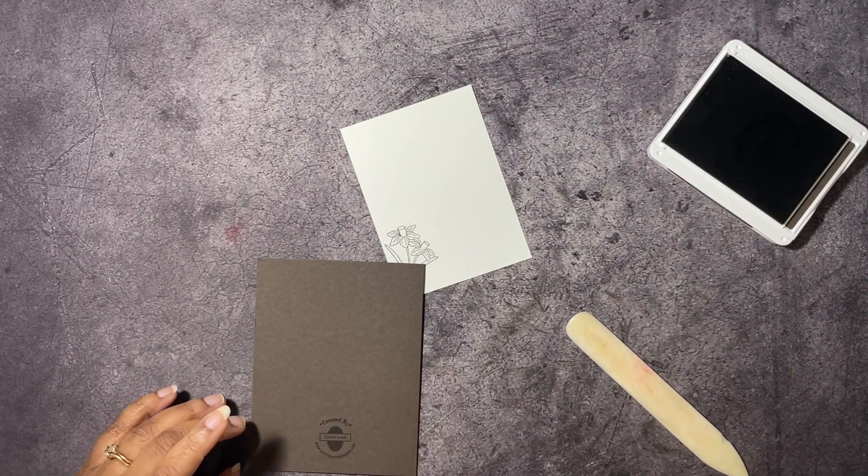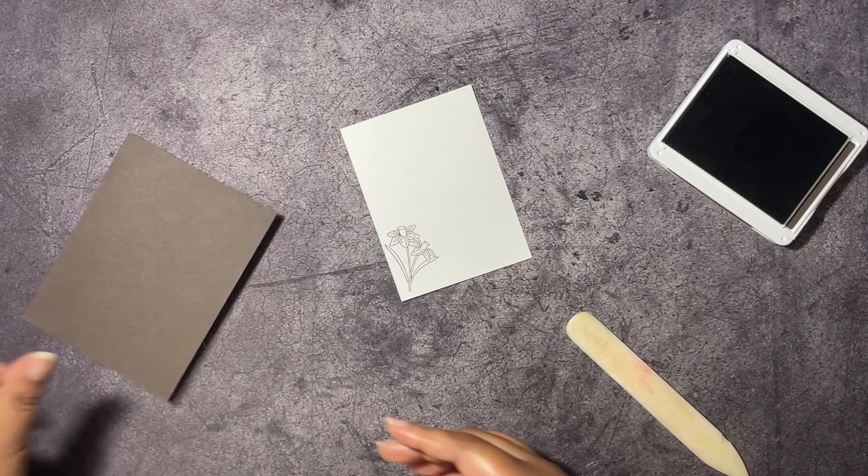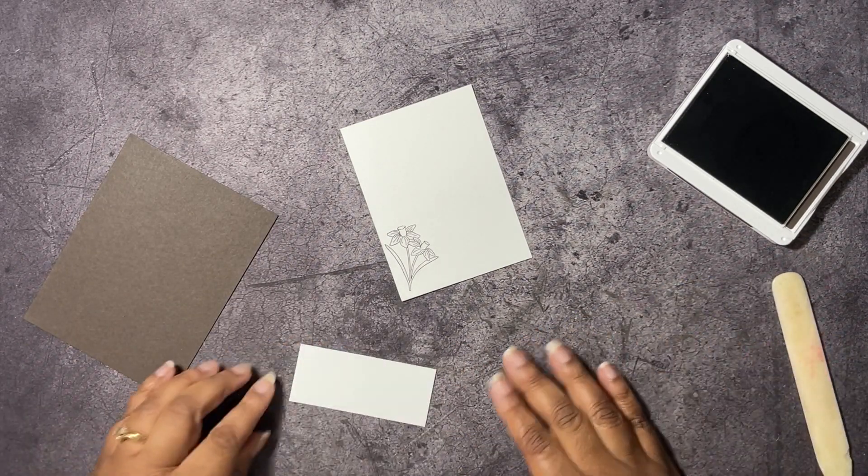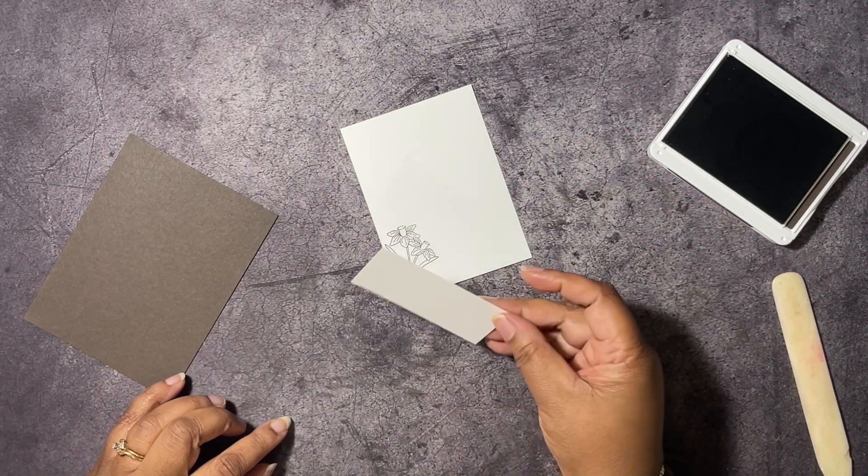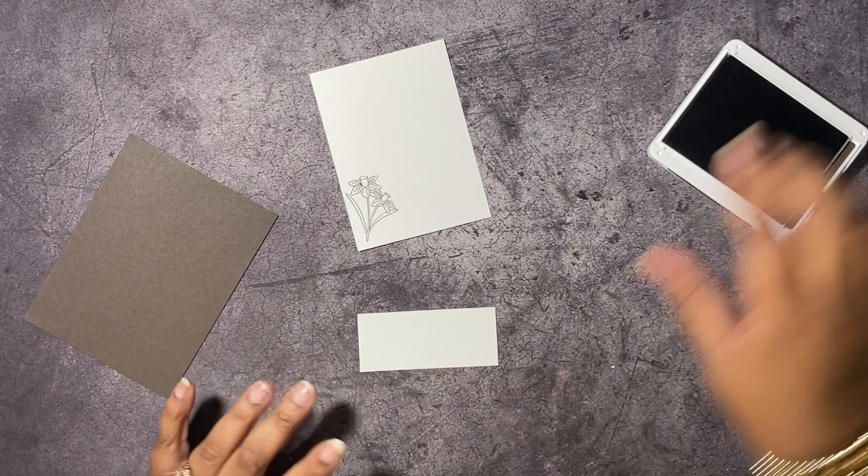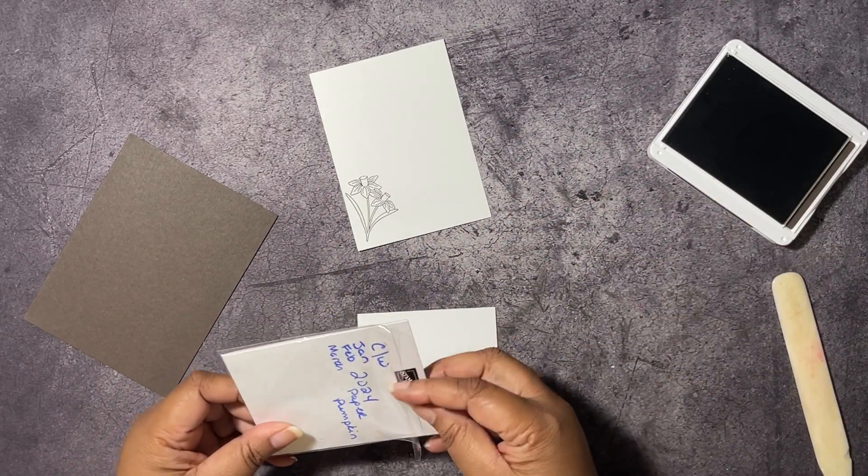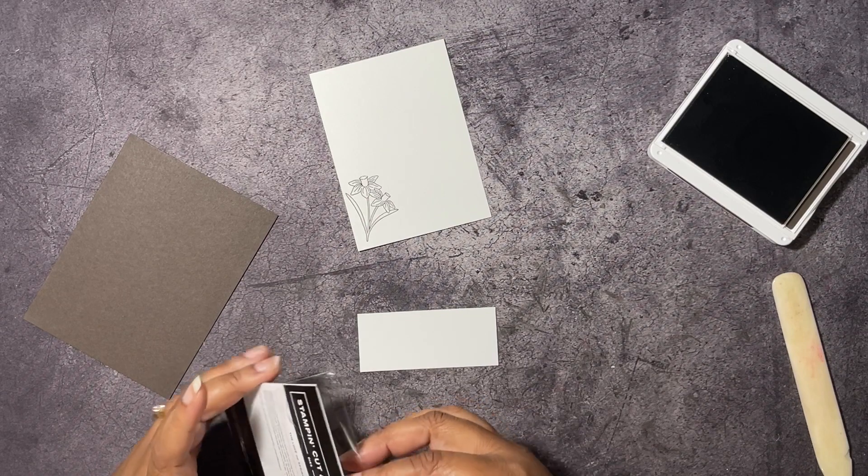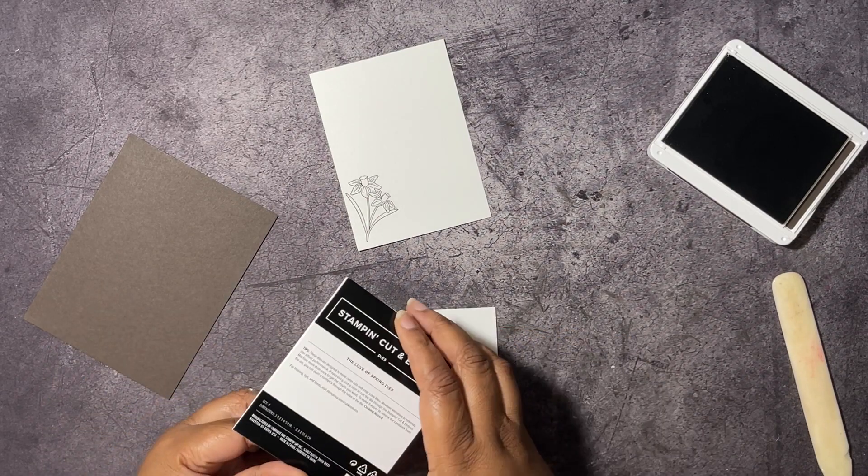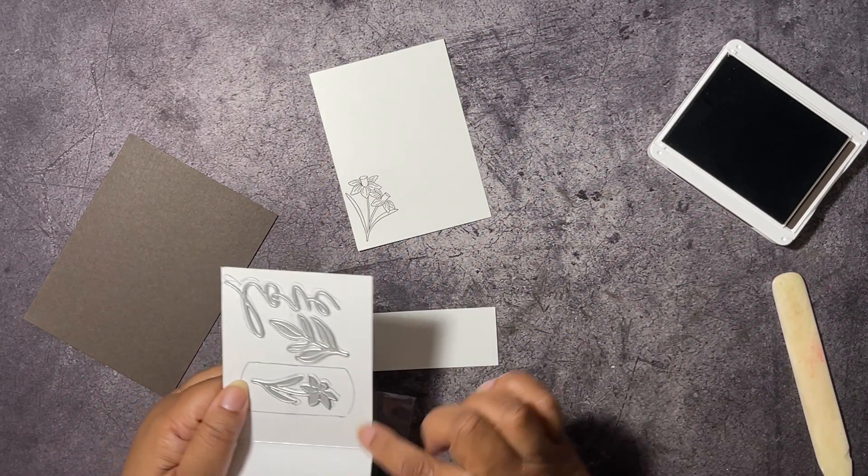We are going to stamp on the back of this with my personalized stamp so we can get that out of the way. Then we have a piece here of some scrap paper. We're going to be using the Love of Spring dies that coordinate with this Paper Pumpkin kit.